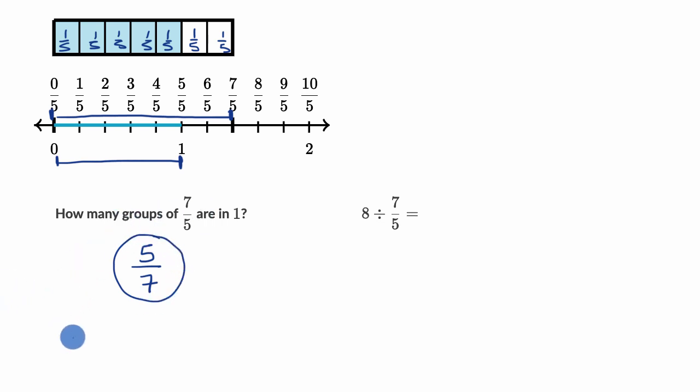So we can also think about this as one divided by seven-fifths. This is another way of saying how many seven-fifths are in one, or how many groups of seven-fifths are in one, and this is equal to five-sevenths, which we've learned in other videos is the reciprocal of seven-fifths. The numerator and the denominator is swapped.